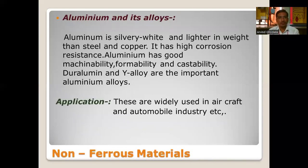Aluminum is silvery white and lighter in weight than steel and copper. It has high corrosion resistance, good machinability, and castability. Duralumin and white alloy are important aluminum alloys. These are widely used in the aircraft and automobile industry.